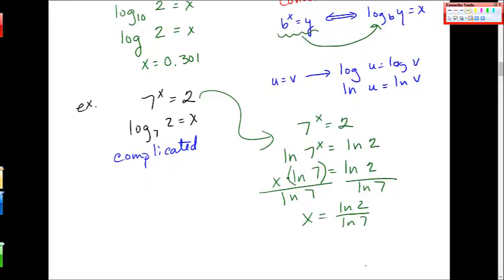And you get x is equal to natural log 2 over natural log 7. And again, this is something that you can plug into your calculator. Natural log 2, close that parenthesis, divide, natural log 7, close that parenthesis. And I get x is equal to 0.3562. Again, I'm going to check.